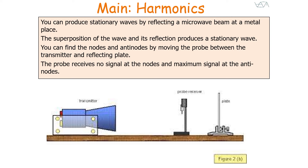You can produce stationary waves by reflecting a microwave beam at a metal plate. The superposition of the wave and its reflection will produce a stationary wave. When the microwave hits the metal plate it reflects, and the two progressive waves superpose to produce a stationary wave. You can find the nodes and anti-nodes by moving a probe between the transmitter and the reflectant plate — the probe receives no signal at nodes and a maximum signal at anti-nodes.